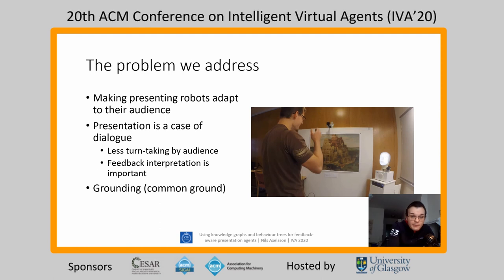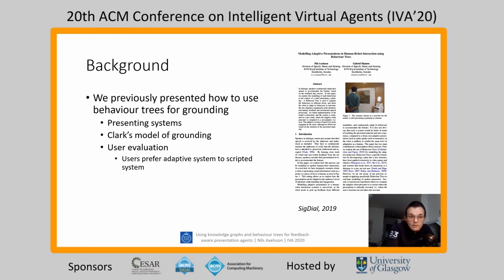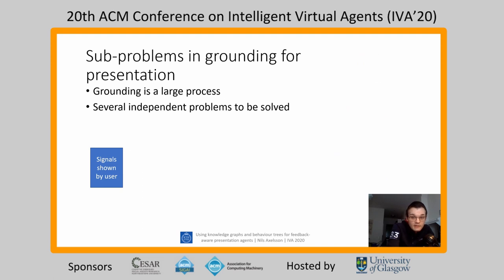We see this as a grounding problem — and when I say grounding, I mean common ground, not symbol grounding. In 2019, we previously presented how to use a behavior tree for this grounding and presentation problem combined. Through a user evaluation in that paper, we were able to show that users preferred an adaptive system enabled by this approach to a scripted system that wouldn't adapt to their feedback. Grounding for presentation is a very large problem and can be broken down into several sub-problems, each of which is a research area in its own right.